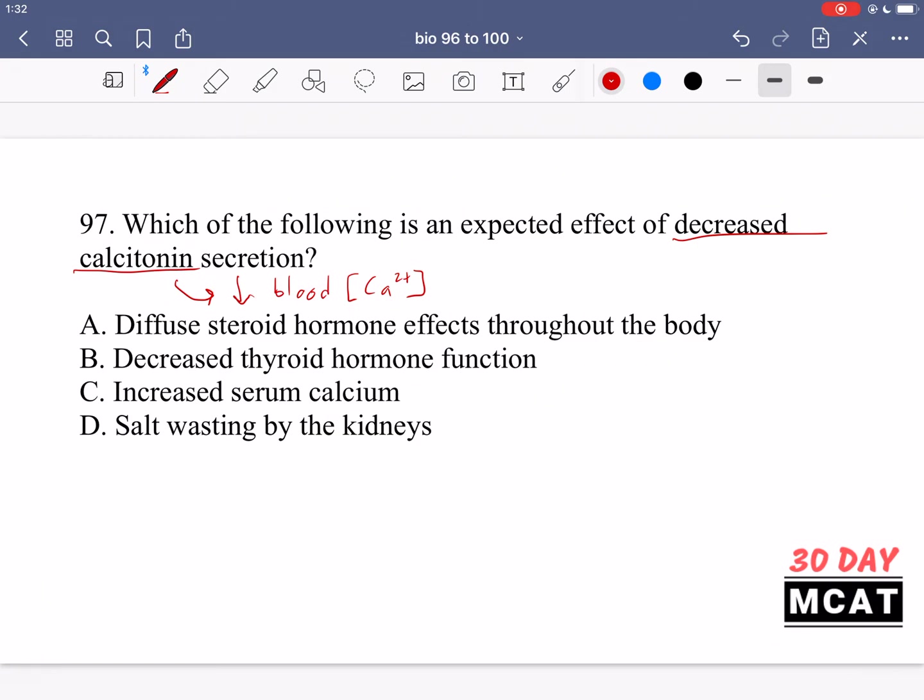If you have more calcitonin you're going to have lower blood calcium levels and then it acts antagonistically to parathyroid hormone. That's released by the parathyroid and that increases the blood calcium level. So we can expect that if we have decreased level of something which lowers the blood calcium then we have a higher than normal blood calcium concentration.